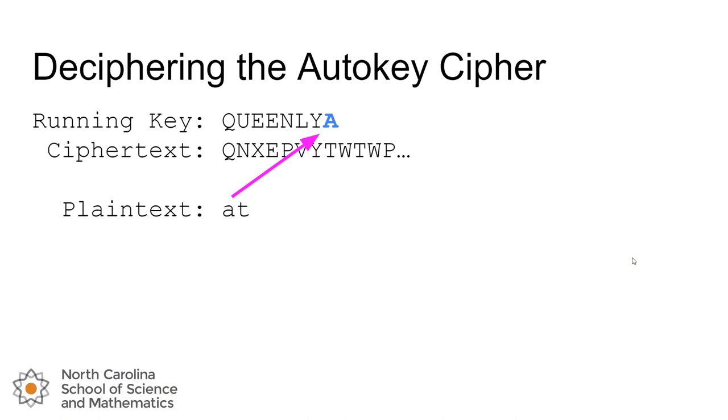And then the next plaintext character we get is T, we append that to the running key. Then we get another T, then we get an A, and then we get a C. And now we have enough of the running key that we can decipher the entire ciphertext. So we can stop appending things and finish out the decryption. And we can see that our message was the phrase 'attack at dawn.'